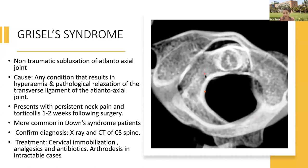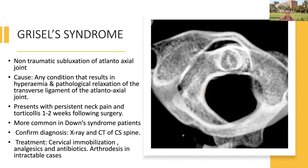Grisel syndrome should be familiar — a non-traumatic subluxation of the atlanto-axial joint reported in 78% of cases following adenotonsillectomy. The child presents with non-traumatic torticollis and rotational instability of the atlas over the axis, due to pathological relaxation of the transverse ligament of the atlanto-axial joint. It presents with torticollis and neck pain, and is more common in Down syndrome patients. We must be very careful about giving neck extension to Down syndrome patients. Diagnosis is by X-ray and CT spine; cervical immobilization, antibiotics, and analgesics generally treat the condition.